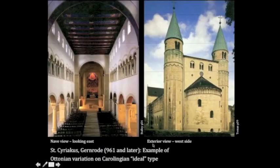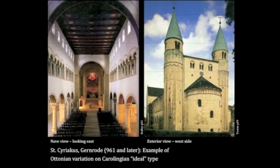Here's another Ottonian church — Saint Syriacus in Gernerod. What I really like about these Ottonian churches is that they seem even clearer in their geometry, in their severe play of volumes and massing. They also have this really strange quality, this kind of double-ended quality, of the apses pulling out in both directions.